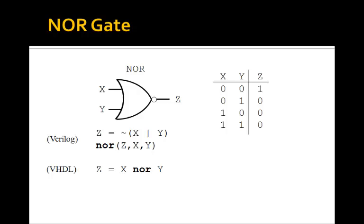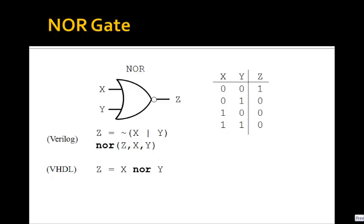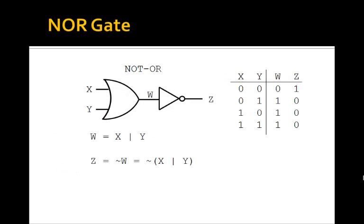We see that the NAND gate really is a NOT AND. If W is the output of the AND gate — that is 1 if both inputs are 1 — then if we add an inverter, Z just becomes NOT W. Here's the symbol for a NOR gate. It looks like an OR gate with this bubble at the output. The output Z of a NOR gate is 1 only if both inputs are 0, and it's 0 if any of the inputs are 1. It's just a NOT OR, or NOR function in Verilog. And in VHDL, you type out the word NOR. The output W of the OR gate is 1 if any of the inputs are 1, and if we invert it, we get the output of the NOR gate.